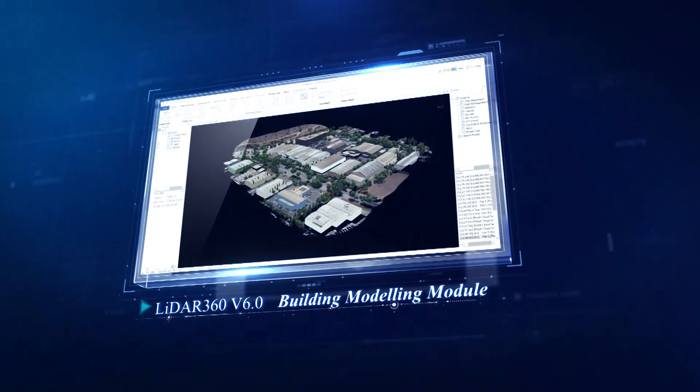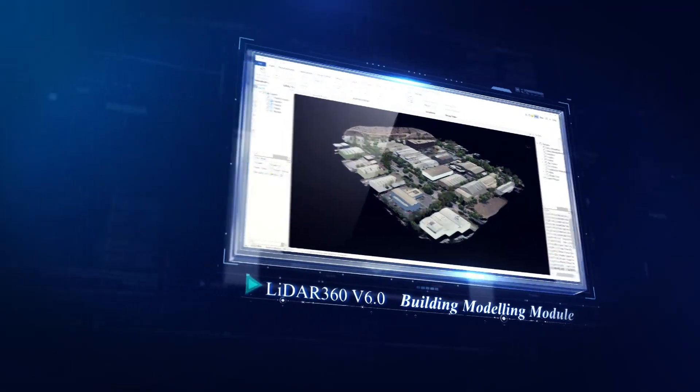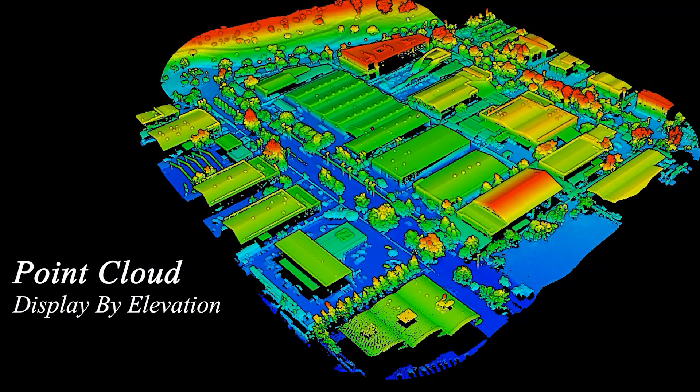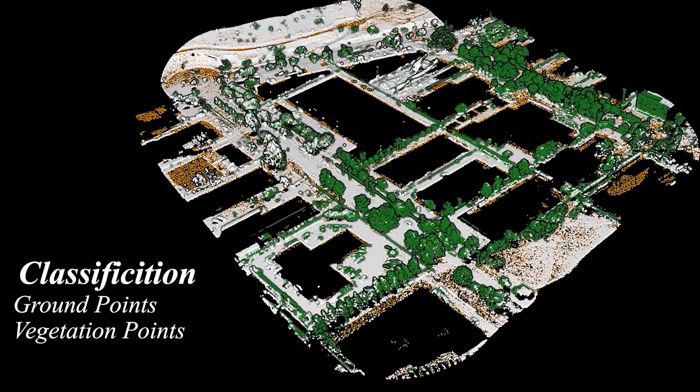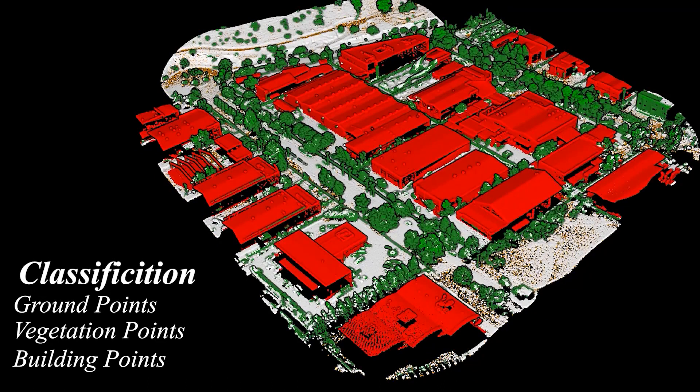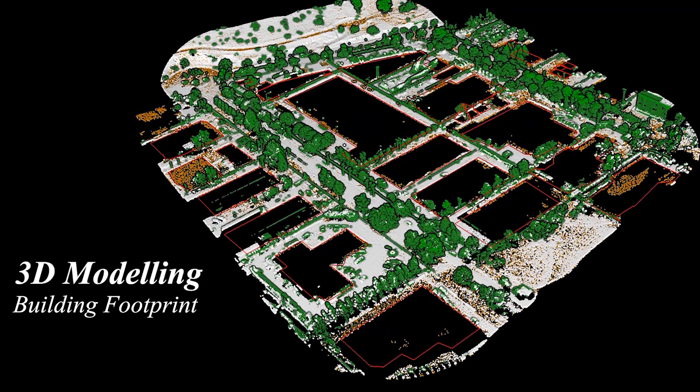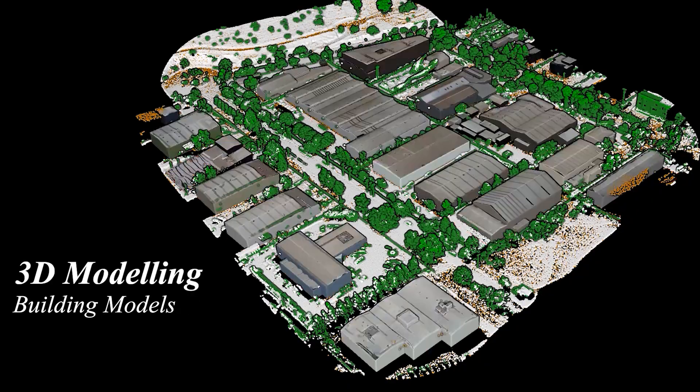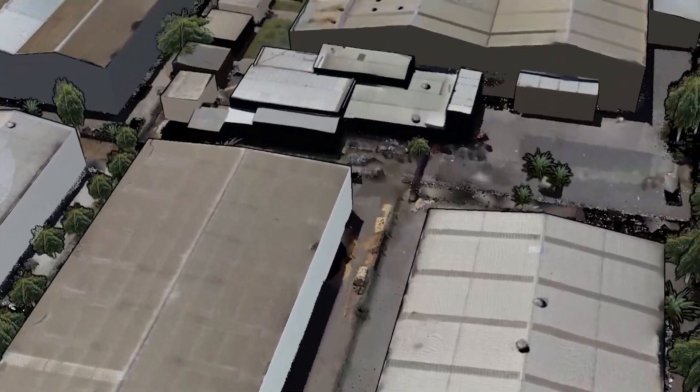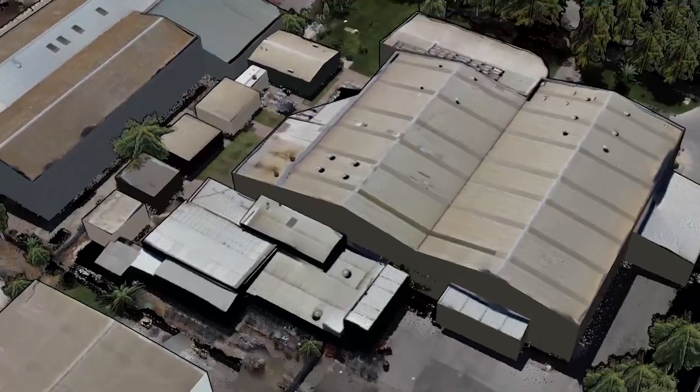LiDAR 360 version 6.0 new building modeling module. It can automatically build accurate single and semantic building models based on point clouds and building outlines. Build CIMs together with terrain and forest 3D models.